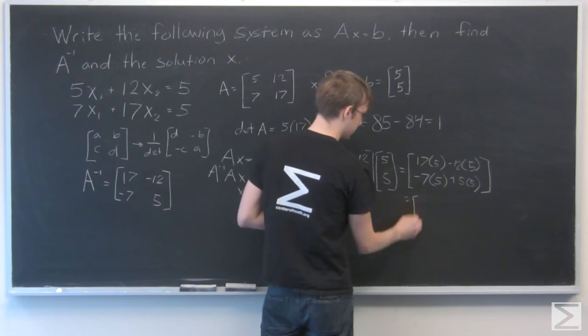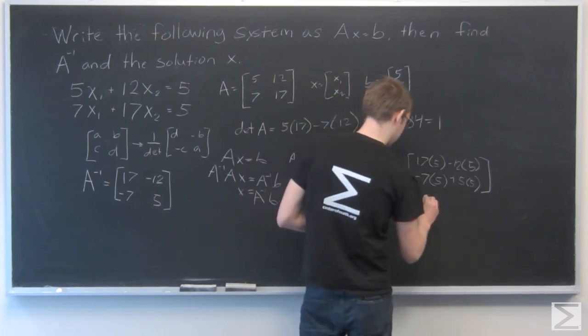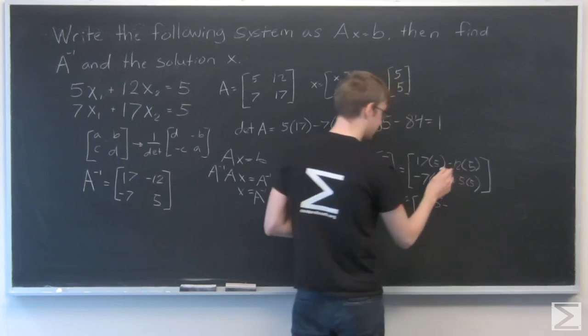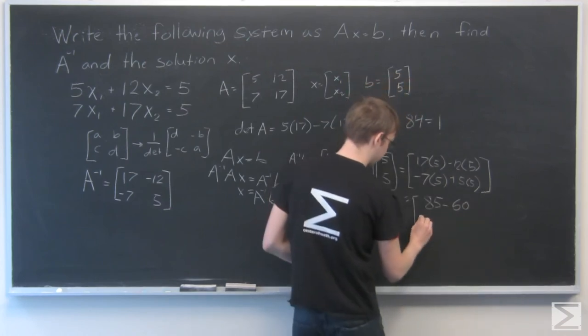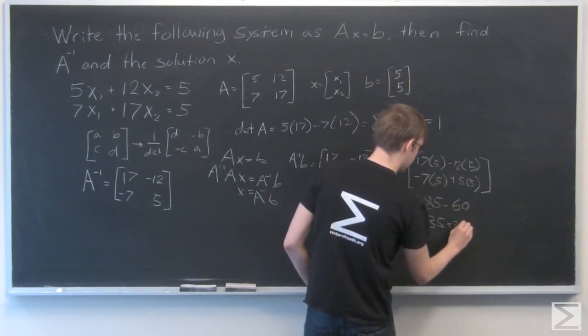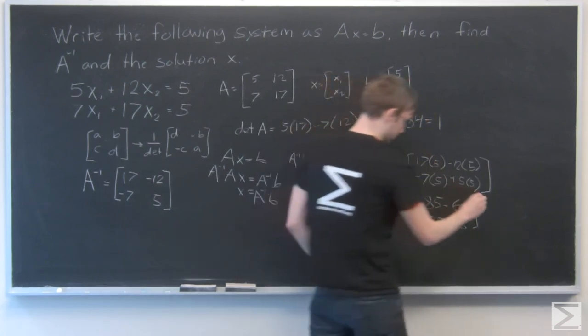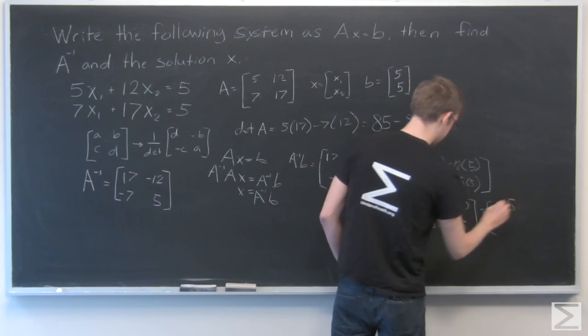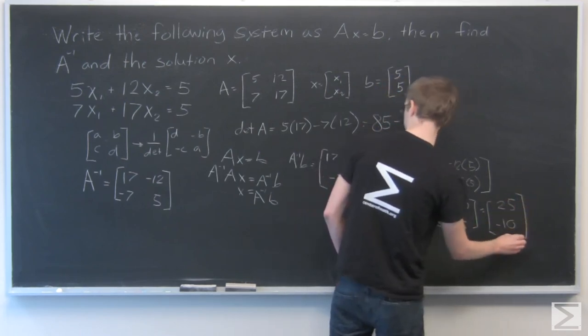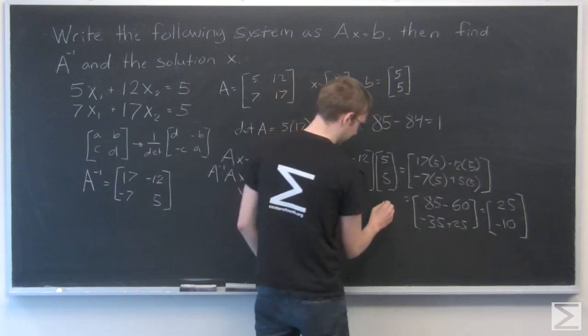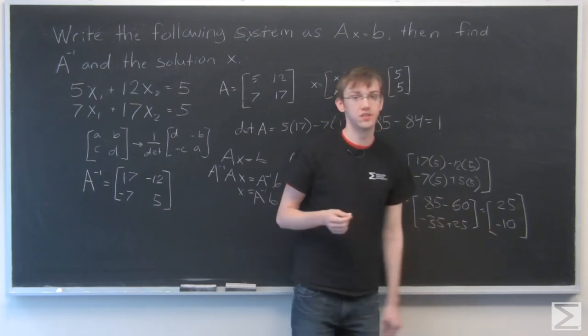Let's simplify that. 17 times 5 was 85, and 12 times 5 is 60. Minus 7 times 5 is minus 35, plus 25. And we can simplify that to 25 and minus 10. So X1 is 25 and X2 is minus 10.